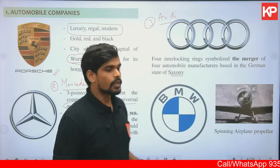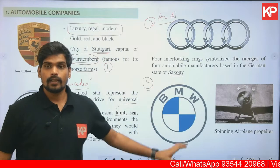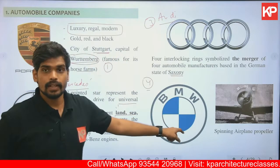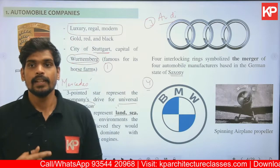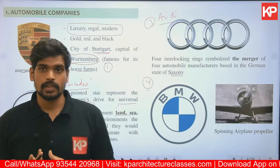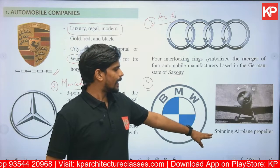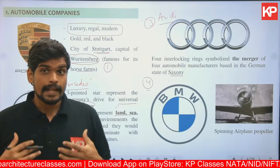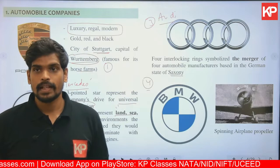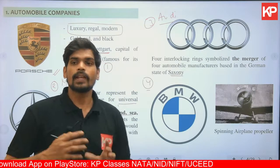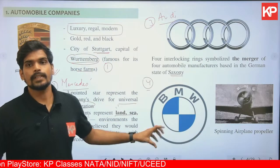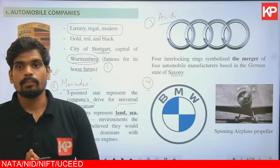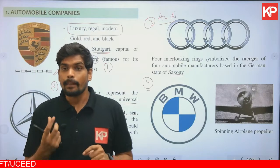The fourth important automobile brand is BMW. BMW uses a circular logo divided into four quadrants, with alternating blue and white segments. The inspiration for this logo is the spinning airplane propeller, because BMW initially produced aircraft engines during World War II — it is said BMW manufactured more than 60,000 airplane propellers or engines. The logo mimics the pattern of a spinning propeller.